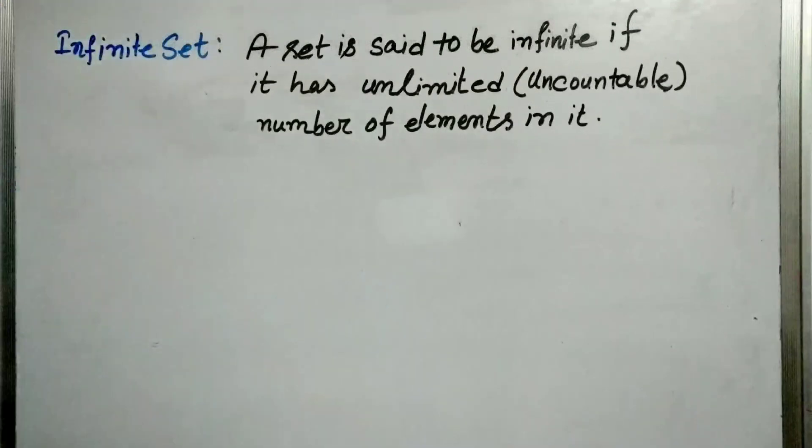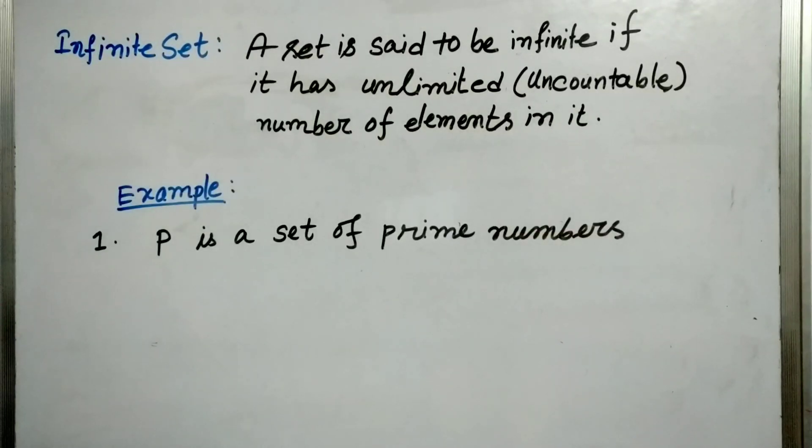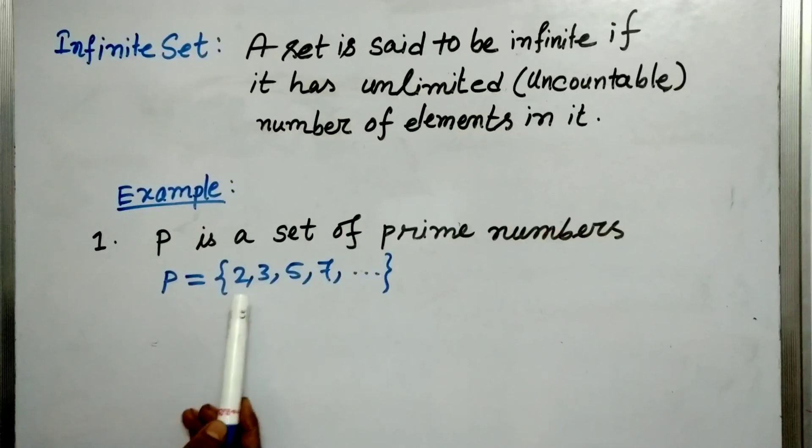So let us go for infinite set. A set is said to be infinite if it has unlimited or uncountable number of elements in it. So let us go for an example. Suppose P is a set of prime numbers. So this will be the form of P: {2, 3, 5, 7, ...} and so on. So we cannot end by counting. So it is uncountable. So therefore it is infinite. It has actually no end.